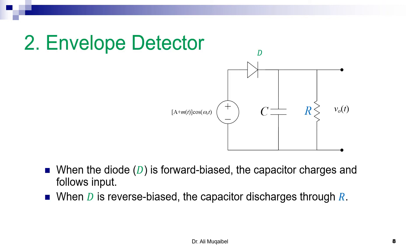The second non-coherent detector is the envelope detector. There are some similarities between the two — we have a diode and a receiver. But in principle here, our objective is just to follow the envelope. So we'll be blocking the negative part. The way we think is different: we'll be blocking the negative part, and then we have a capacitance that's going to charge and discharge according to the signal, and this is just a load. So when the diode D is forward biased, the signal is going to charge the capacitance. And when the signal is reverse biased, it's going to discharge on the resistance.